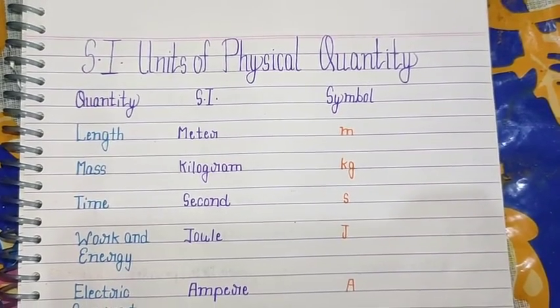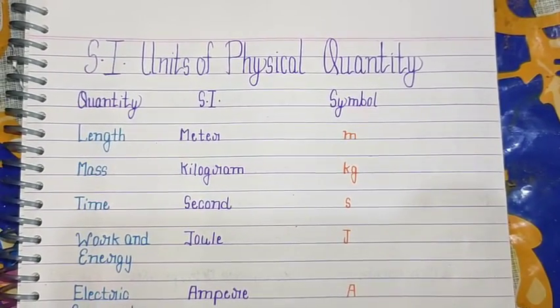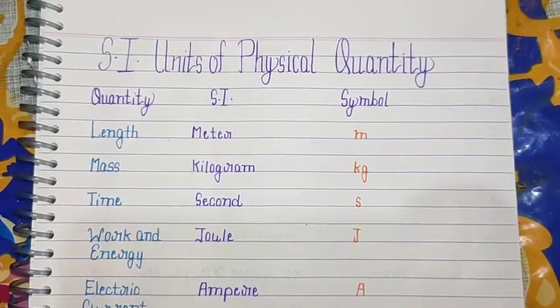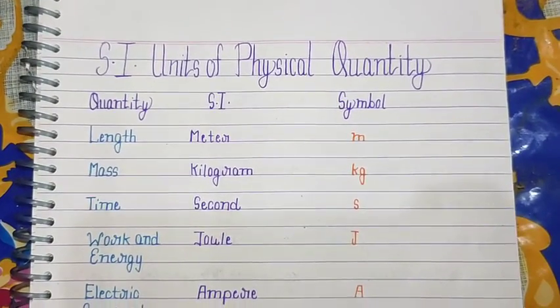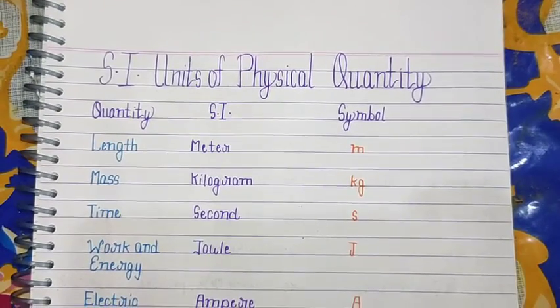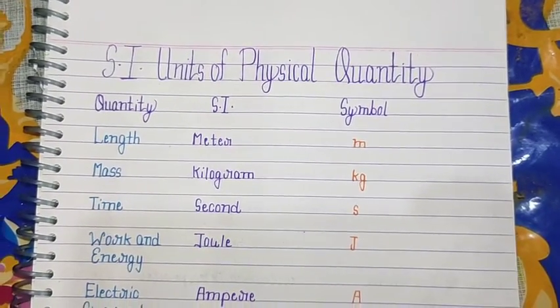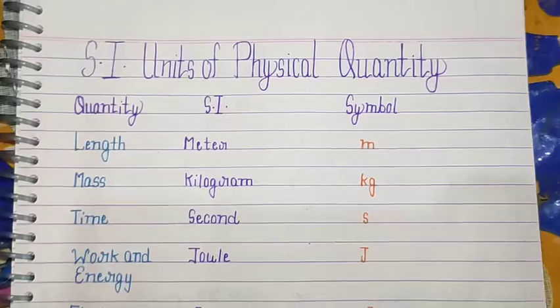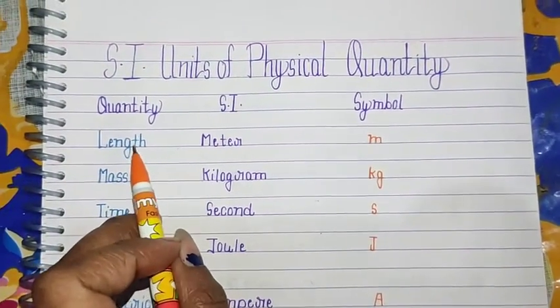Hello everyone, welcome to my channel Anakrita Education Hub. I hope you all are good. In this video we will discuss SI units of physical quantities. So let's start. First in this list, length - SI unit of length is meter and its symbol is m.